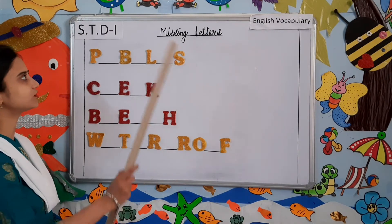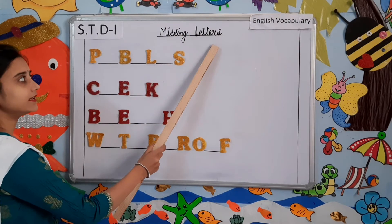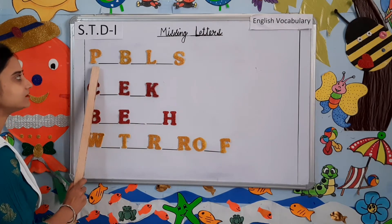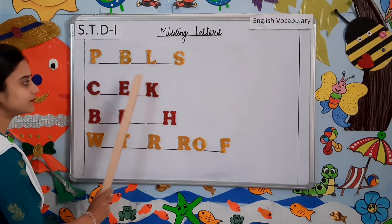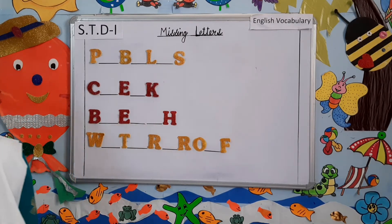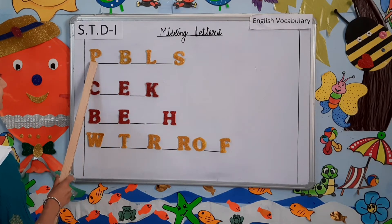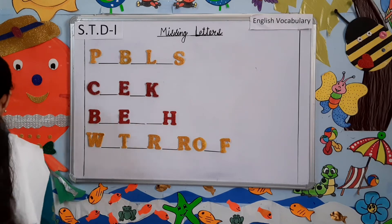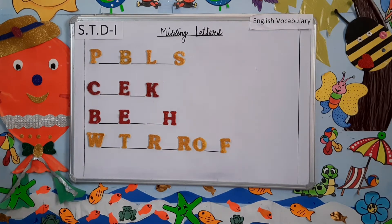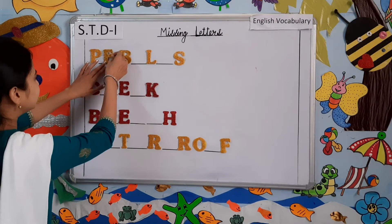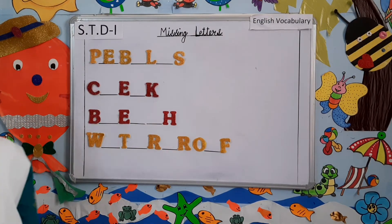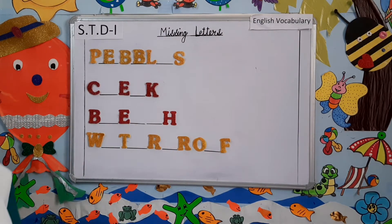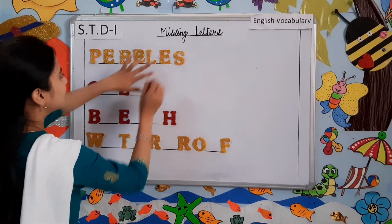Now students, moving on to another topic, that is missing letters. As you can see, I have written few words over here and we have to fill in the missing letters. Number one: P-B-L-S. The correct word is P-E-B-B-L-E-S. Pebbles.